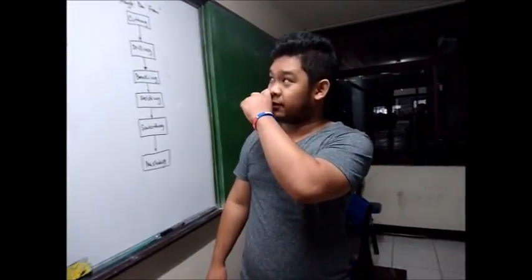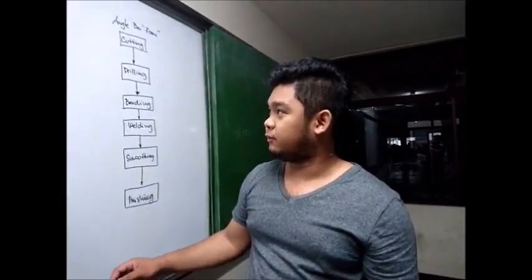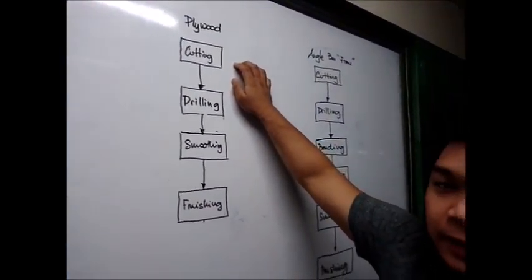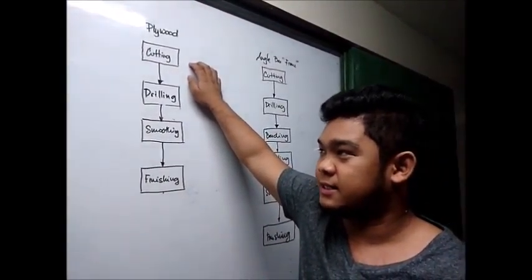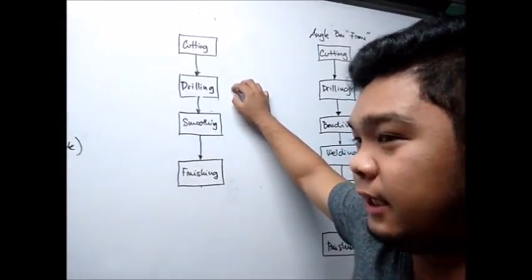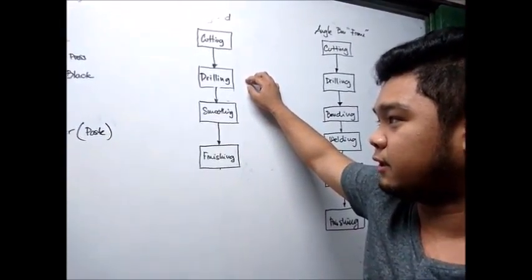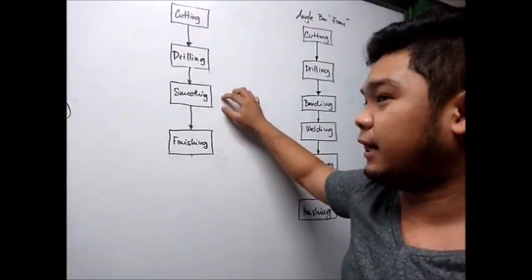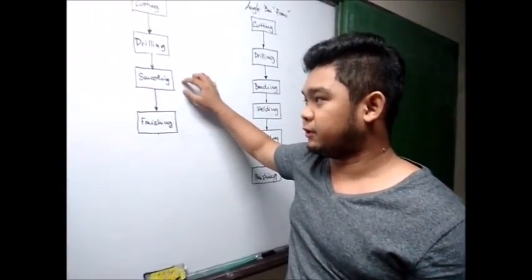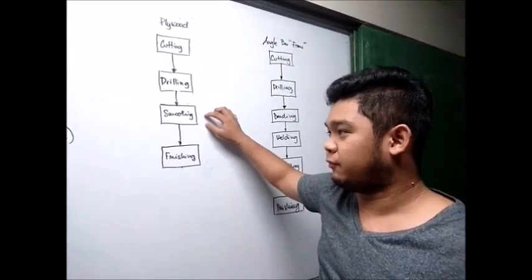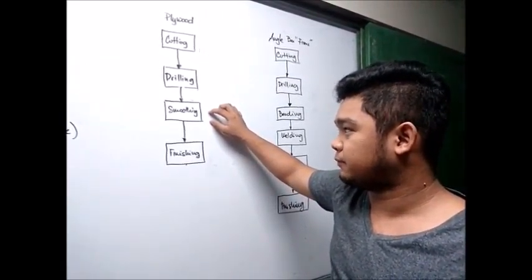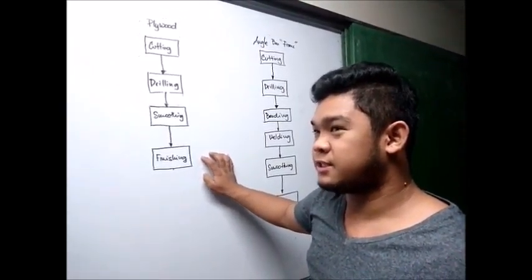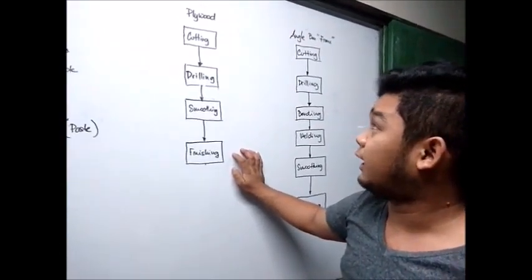The manufacturing process for the plywood is divided into four steps. First is cutting: cutting the plywood into its necessary sizes. Second is drilling: drilling the points where the bolts will be inserted. Third is smoothing: the sides of the plywood will be sandpapered, and a wood file will be used to cut its sharp edges. And lastly, finishing: this process includes the painting of the plywood.